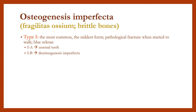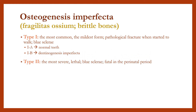Type 1A has normal teeth, while type 1B has dentinogenesis imperfecta. Type 2 is the most severe, with clinical manifestations of blue sclera, and is fatal in the perinatal period.